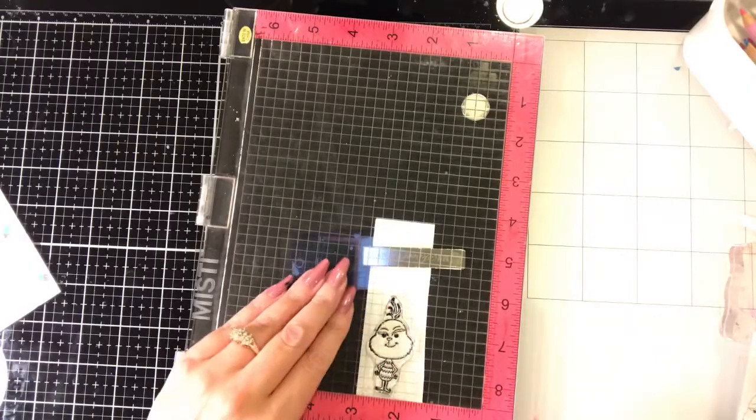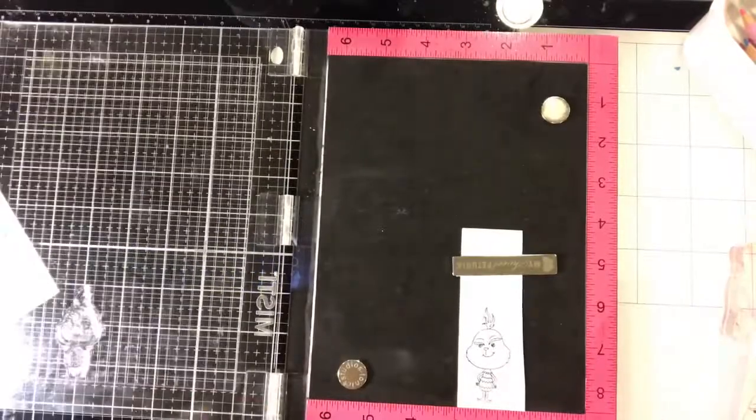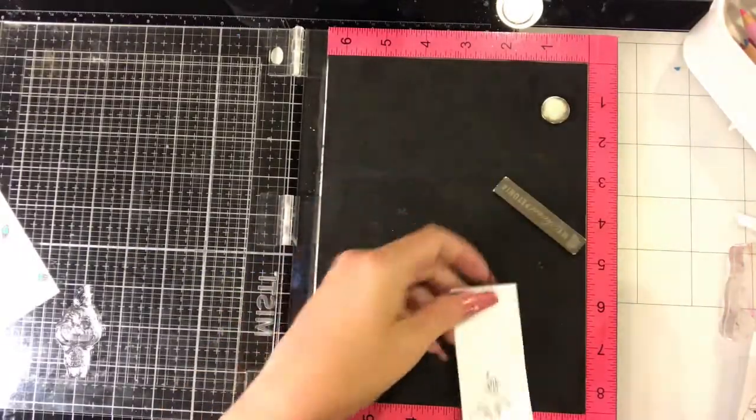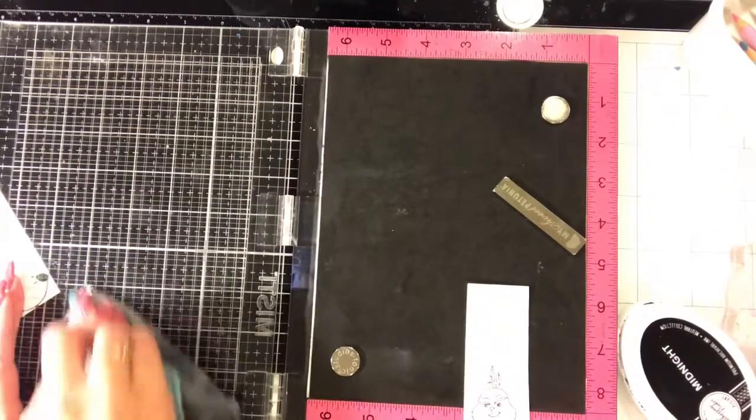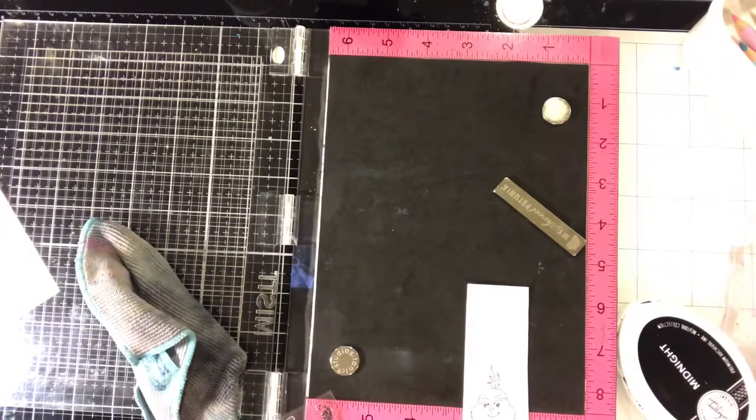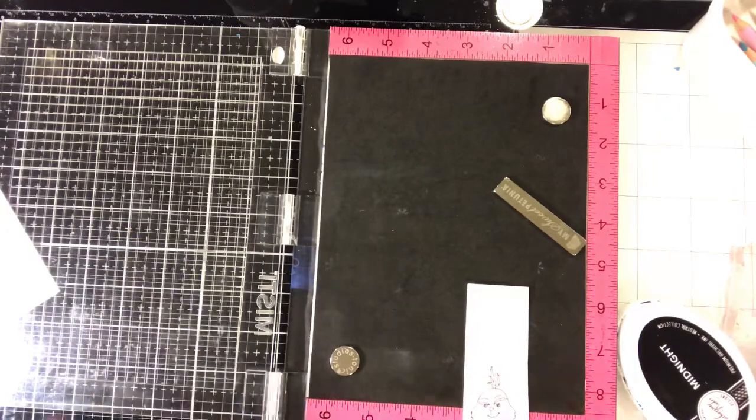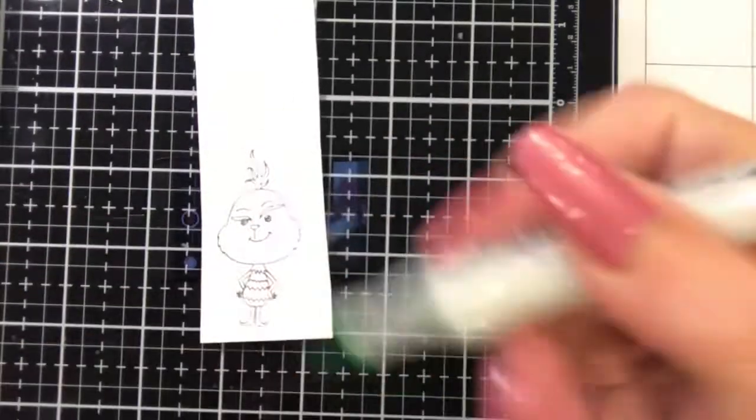So now we are taking an image from the Kindred Stamps Merry Whatever Stamp Set and stamping it out with that same Catherine Pooler Midnight Ink. And this is just stamped on a piece of 65-pound recollections cardstock. And then I'm going to move the camera down in a little bit to show you a little bit more of a close-up coloring of this image.